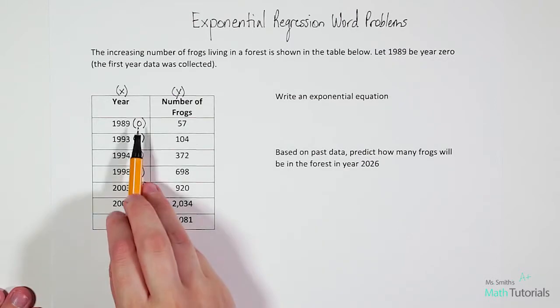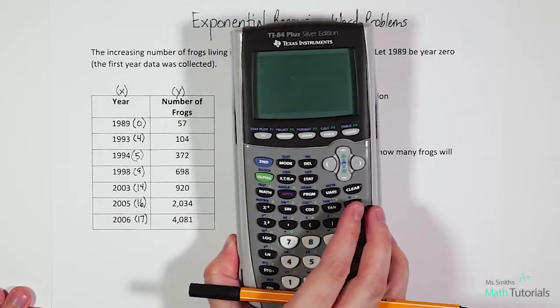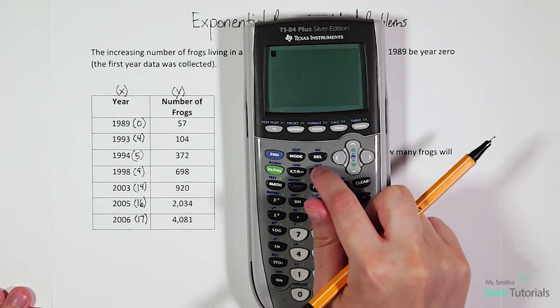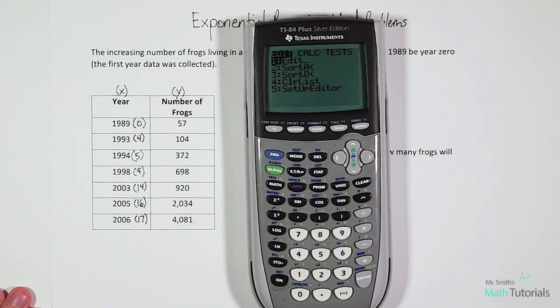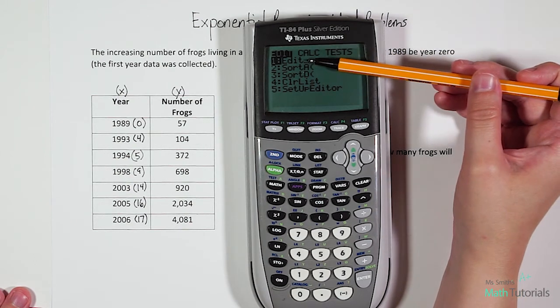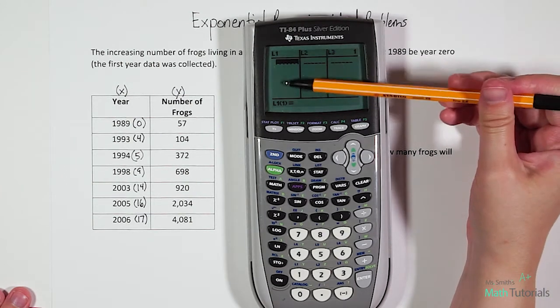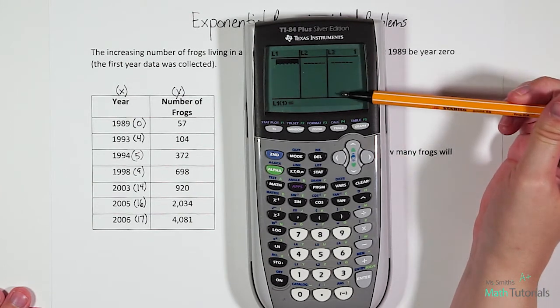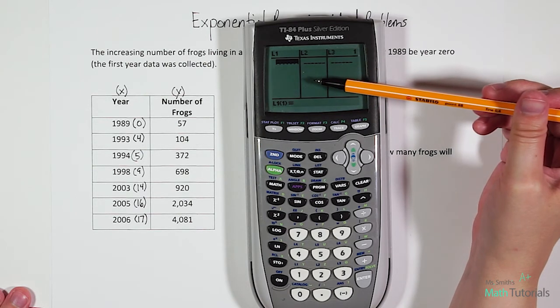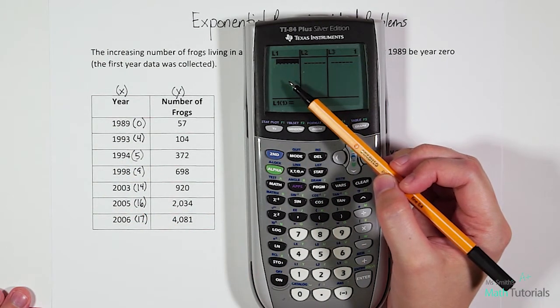Now that we have our year number, we can go ahead and put our data into the calculator. What we want to do is use this stat button. And then we want to input this data into our list. We need to edit our list first, so we're just going to hit enter. Now you'll notice we've got list one, list two, and we even have a list three, but we won't be using that. We only have two lists for this problem.